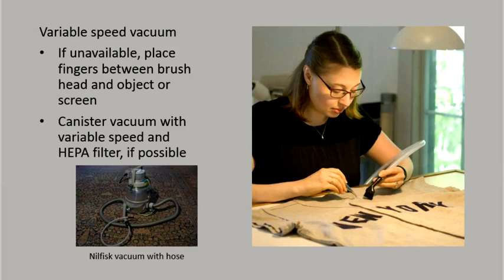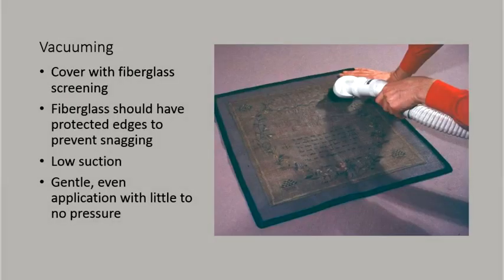The textile should first be placed on a clean table and covered with fiberglass screening, the edges of which have been covered to protect the fabric from being torn. This screen has a border of twill tape along the edges, which was sewn onto it by machine. Use of the screening as a barrier will protect damage to loose or weak areas of the textile and keep loose bits from being sucked up into the vacuum. Some fabrics are strong enough to dispense with the need for a screen, but silk is not usually among these. I recommend using a screen anytime you are working with a silk object.